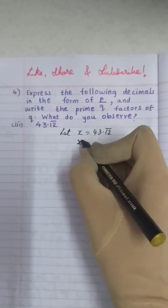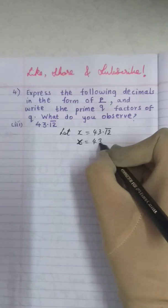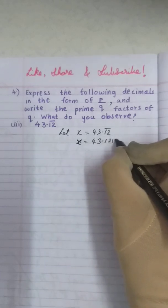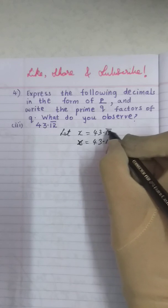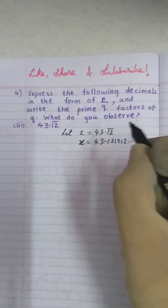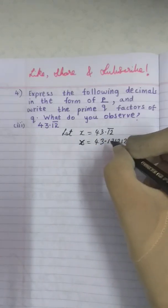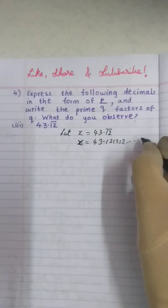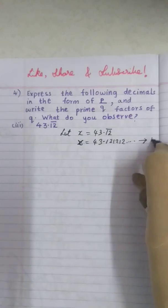43.12 bar means that it is equal to 43.121212 and so on. Bar means that two digits are repeating. That is why 12 bar I have written as 121212 and so on. I will assume this as equation 1.